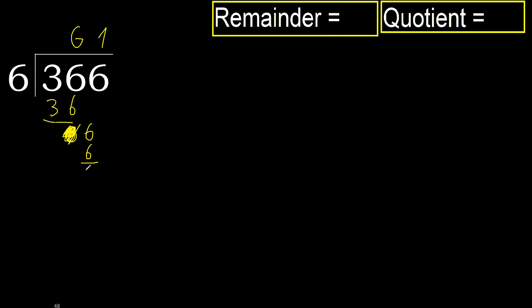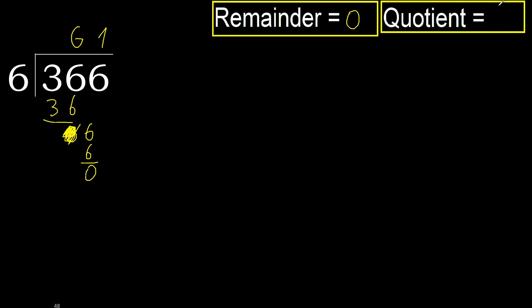Subtract. There is no remainder, therefore we finish. 366 divided by 6 is 61.